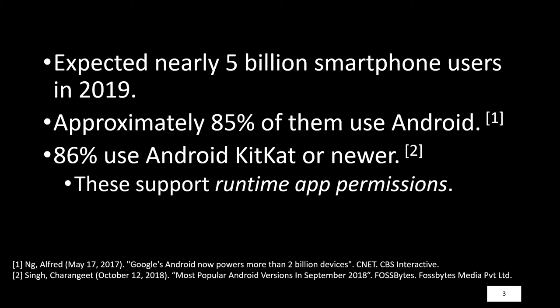Runtime app permissions are especially important and useful because prior to their existence — that is, prior to Android KitKat — users could only choose to moderate access to the sensitive data exposed by these APIs by choosing not to install the app. So this was quite a big improvement.